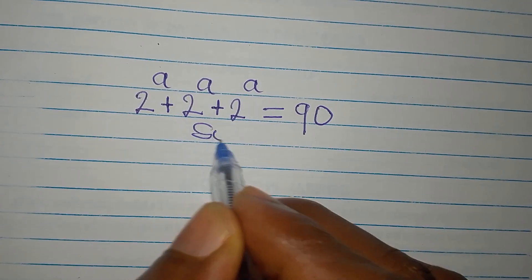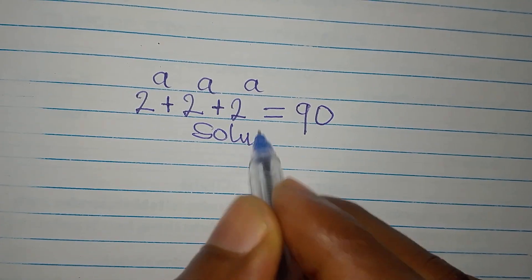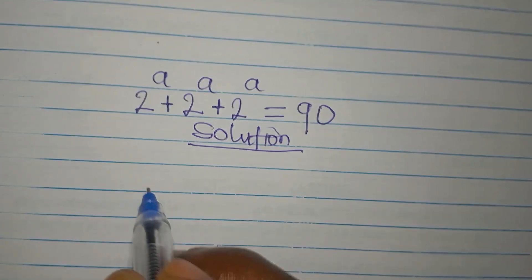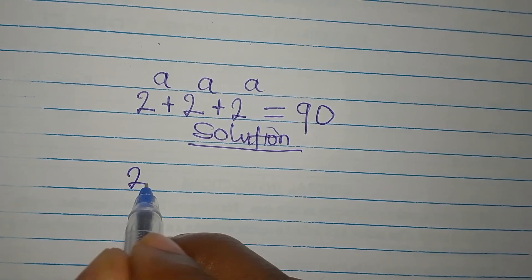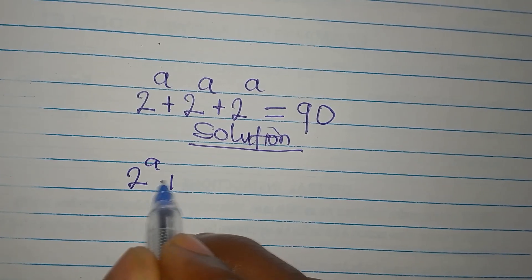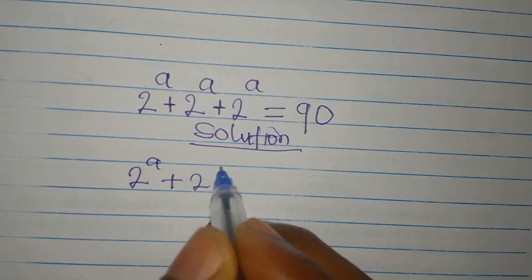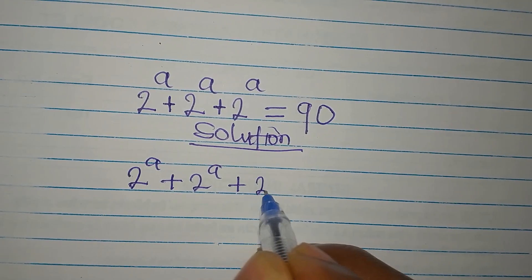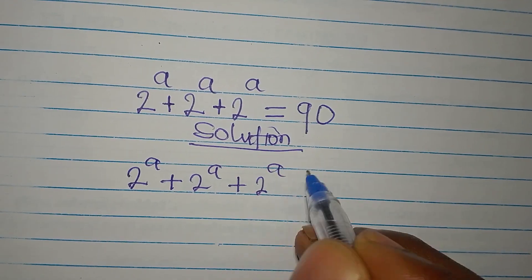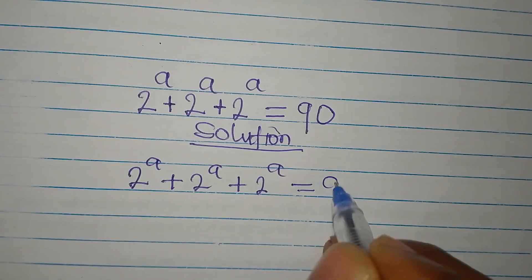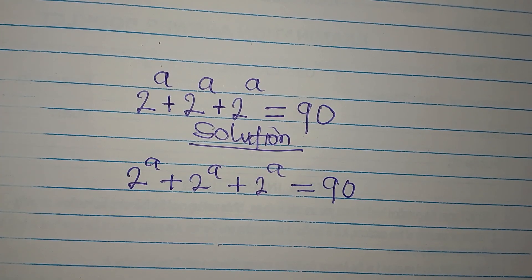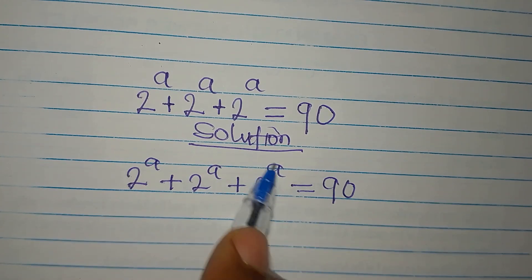Let's provide a solution to this problem: 2 to the power of a, plus 2 to the power of a, plus 2 to the power of a equals 90. This is simple because we have the same terms.